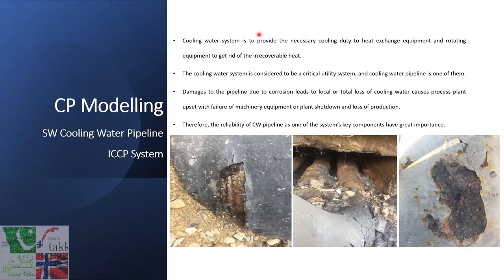The cooling water system provides the necessary cooling duty to heat exchange equipment and rotating equipment to get rid of recoverable heat. The cooling water system is considered a critical utility system, and the cooling water pipeline is one of them. Damage to the pipeline due to corrosion leads to local or total loss of cooling water, causing process plant upset, failure of machinery, equipment or plant shutdown, and even loss of production. Therefore, the reliability of the cooling water pipeline is one of the system's key components and of great importance.